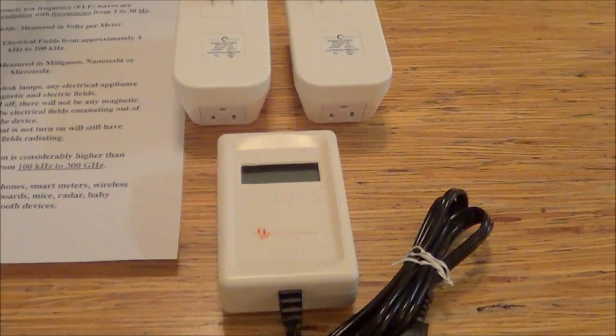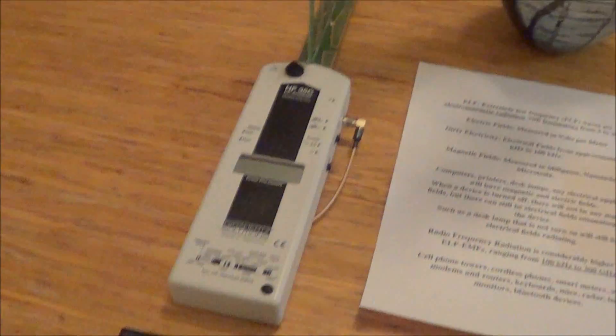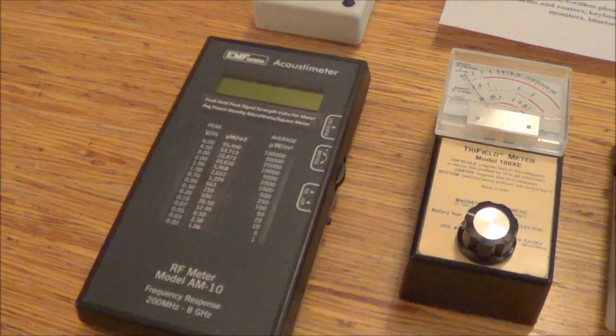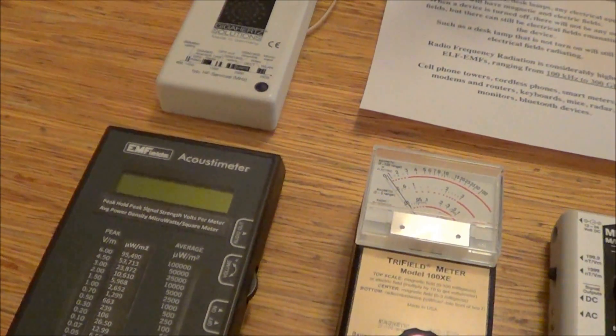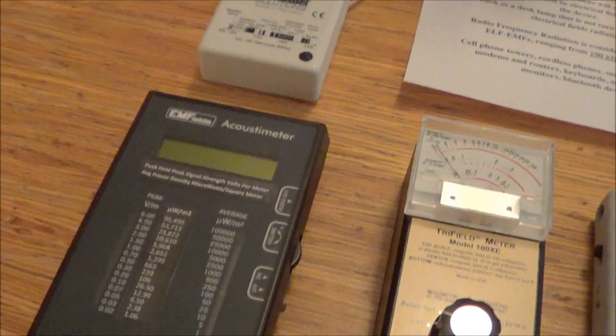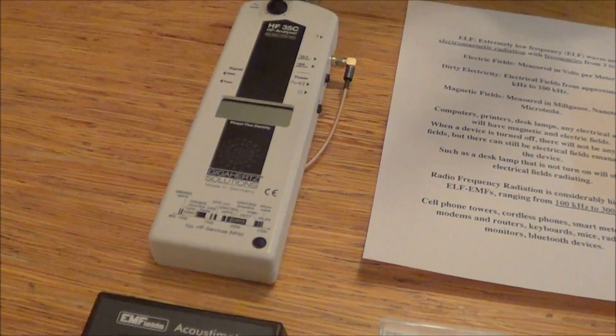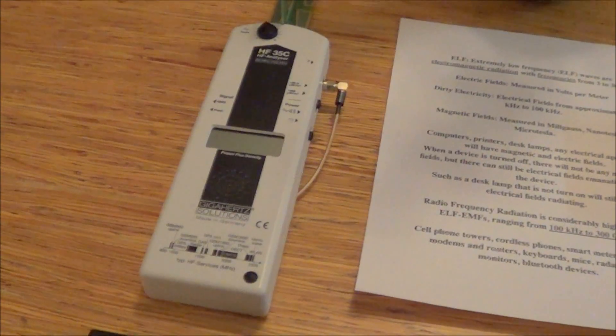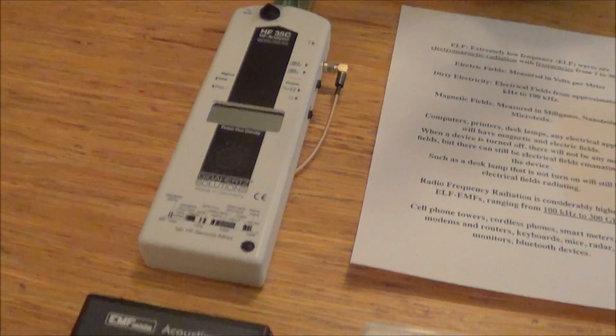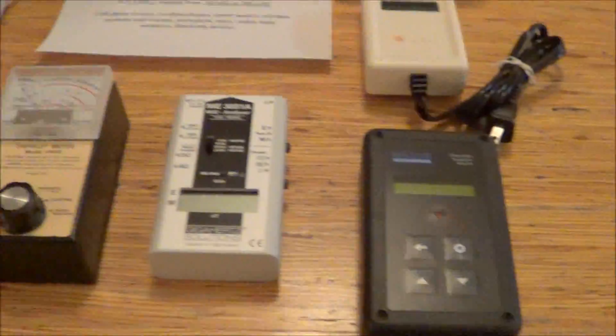Once again, the Stetserizer meter is for measuring dirty electricity. And the radiofrequency meters are for measuring radiofrequency radiation. From 100 kilohertz to 300 gigahertz is what the radiofrequency radiation goes to, but the meters, these meters don't go up to 300 gigahertz. These are usually from about 200 megahertz to about 2.5 gigahertz. The acoustometer goes up to 8 gigahertz.